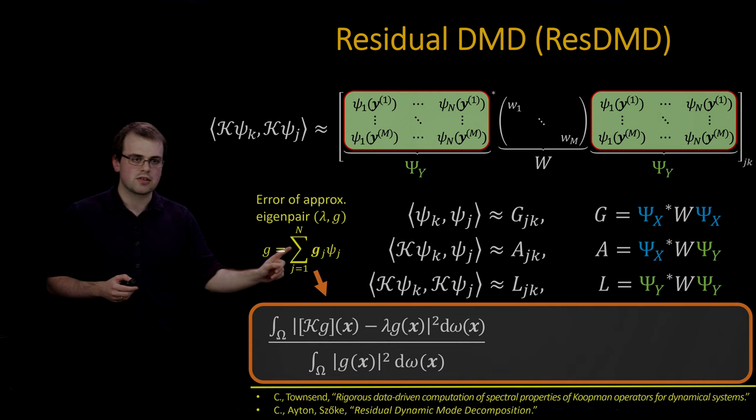ResDMD is very easy to use with any existing DMD type method. You just need to form this additional matrix. Final comment: you can use ResDMD to compute continuous spectra. If you're interested in this, please consult our paper. We have algorithms that do similar things for the continuous spectrum. The code for ResDMD can be found here. You can also look at my website if you're interested in further papers, presentations and code as well. Thank you very much for your attention.